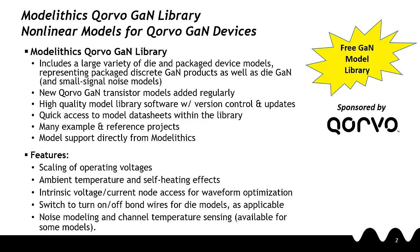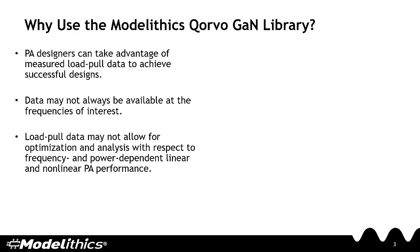The ModelLythics Corvo GAN library is available for free for Corvo-approved designers and is now being used by over 200 organizations worldwide. So why use the ModelLythics Corvo GAN library?